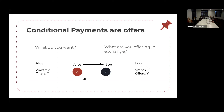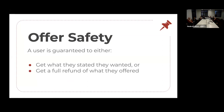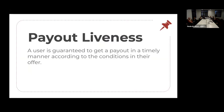When we go back to conditional payments, we call those offers. An offer is defined as saying what you want and then saying what you are willing to offer in exchange. Alice was willing to offer X and she wanted Y in return. Bob was willing to offer Y and he wanted X in return. Once you have users define things in terms of offers, we can enforce this new safety principle that we call offer safety. Under offer safety, a user is guaranteed to either get what they stated they wanted or get a full refund of what they offered. Connected to offer safety is another principle we call payout liveness: a user is guaranteed to get a payout in a timely manner according to the conditions under which they made their offer.